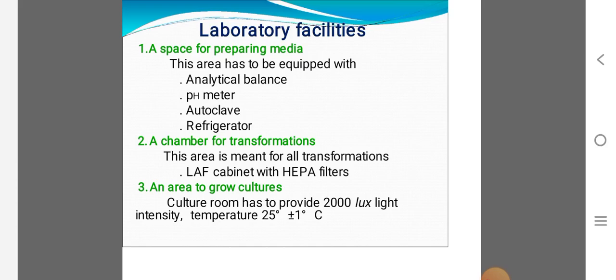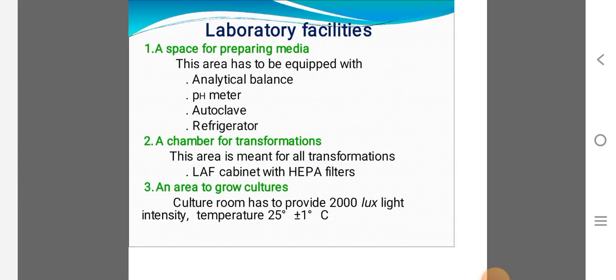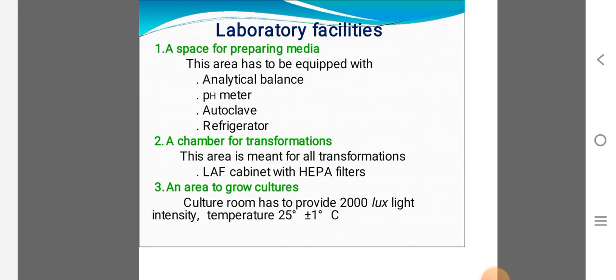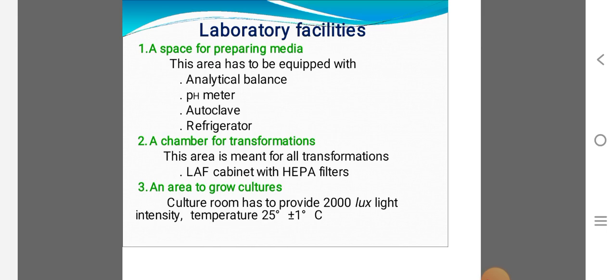The first one is space for preparing media. This area has to be equipped with analytical balance. Analytical balance is useful for weighing the chemicals like macronutrients, micronutrients. pH meter, it is used to check the buffers, either acidic or basic or neutral.